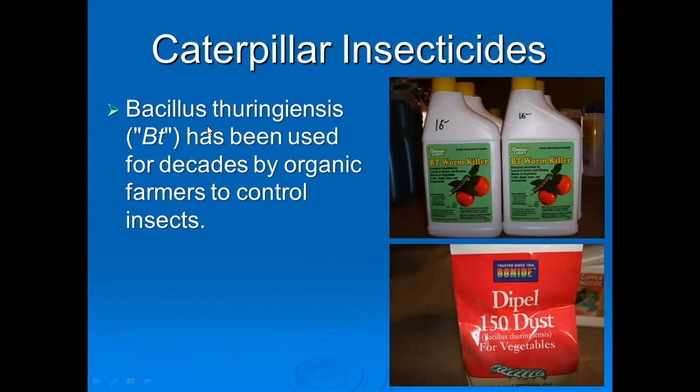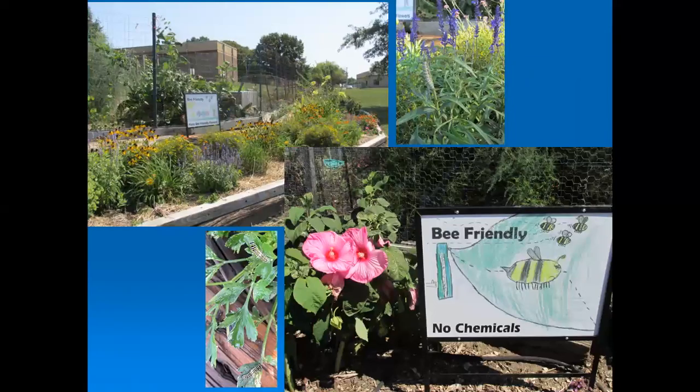There are insecticides that control only caterpillars. One good example is Bt — Bacillus thuringiensis — which has been used for years by organic gardeners. But again, if you're trying to encourage butterflies in the garden, do not use these products because they can't distinguish between a good and a bad caterpillar. If you're going to have bees and insects, no chemicals — or at least when you do spray, don't be out there when you have foraging insects.